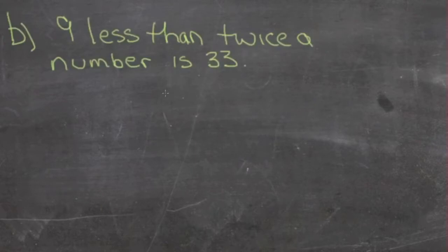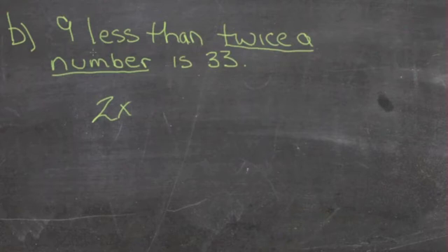For a second example: nine less than twice a number is 33. This one's a little bit tricky because we actually have the number at the beginning that's going to be taken away from something else. Recognize that in order to have nine less than something, we have to have that something first. We have twice a number - that's two times some variable, say x. Nine less than that would be nine taken away from that, and that's going to be 33. So nine less than two times some number equals 33.